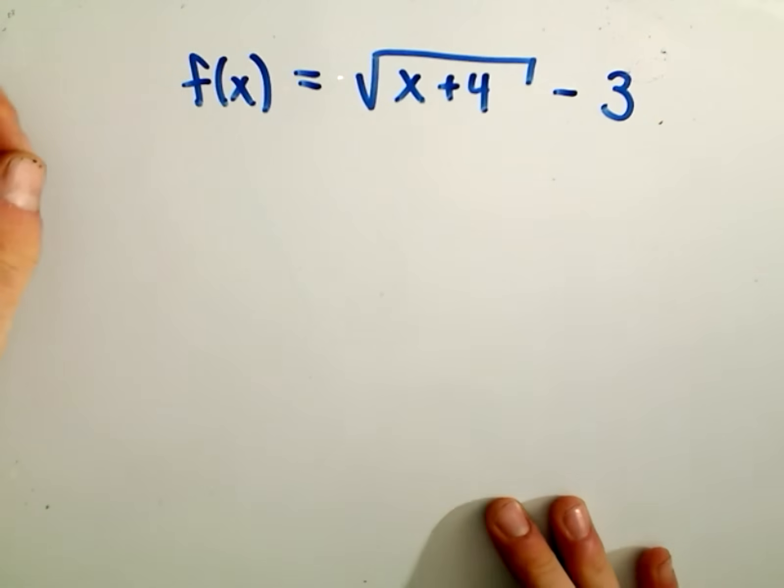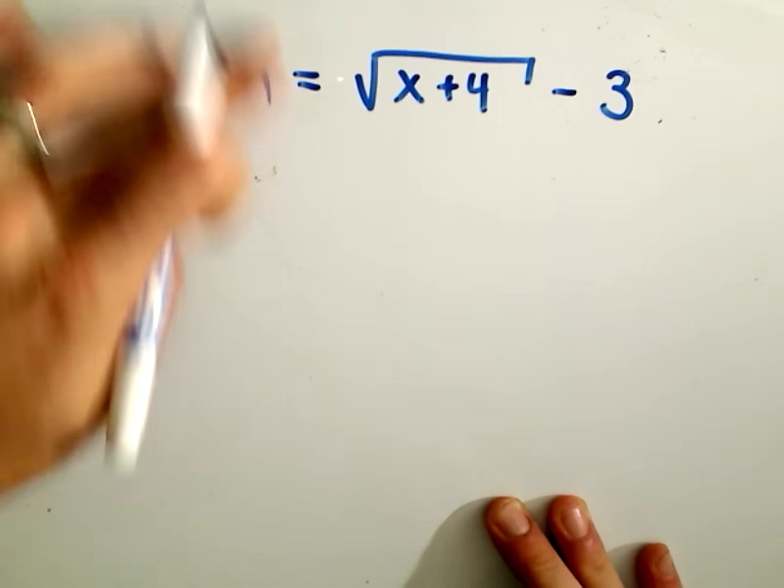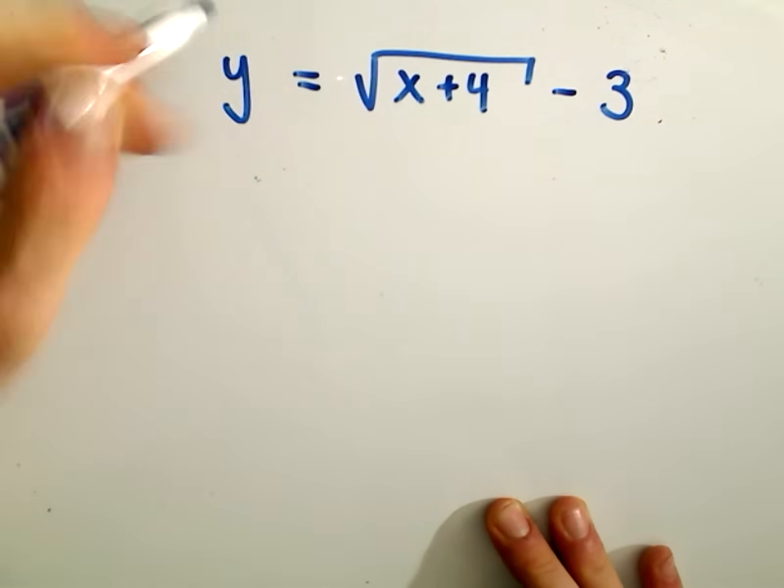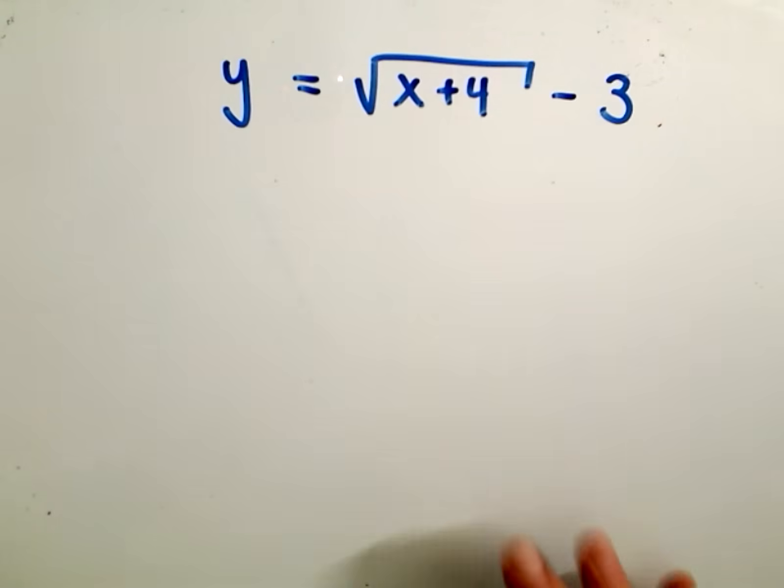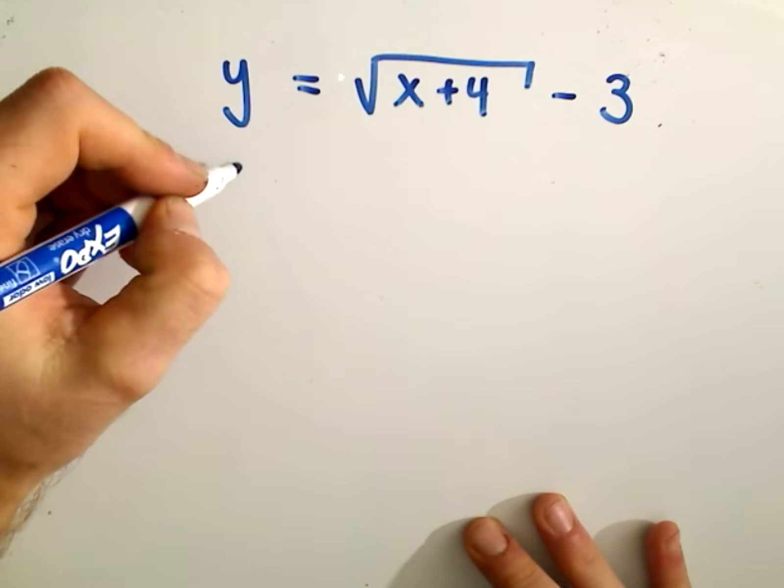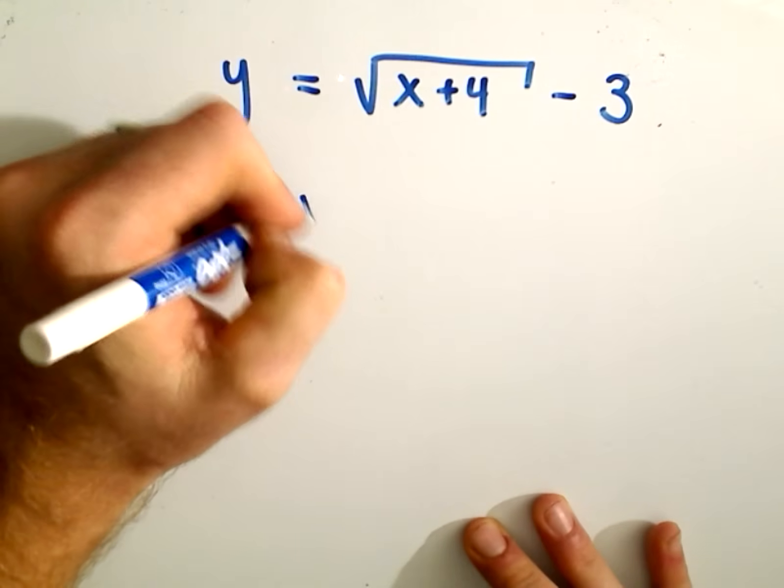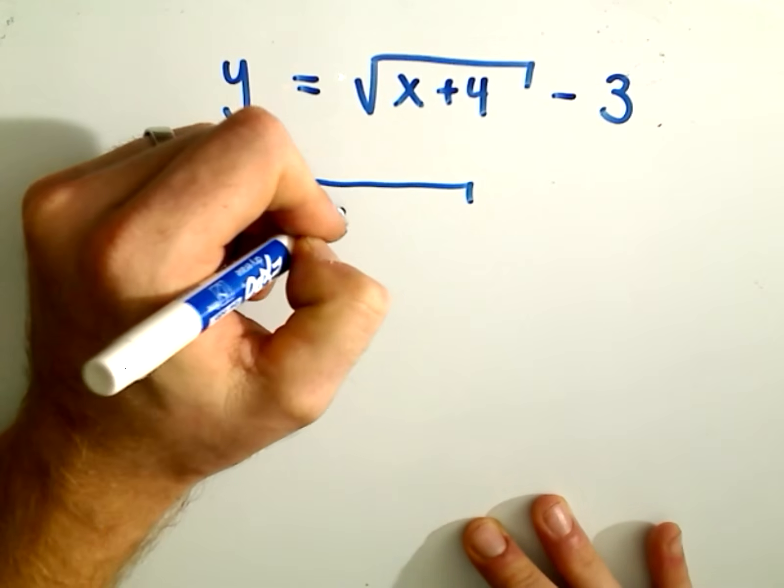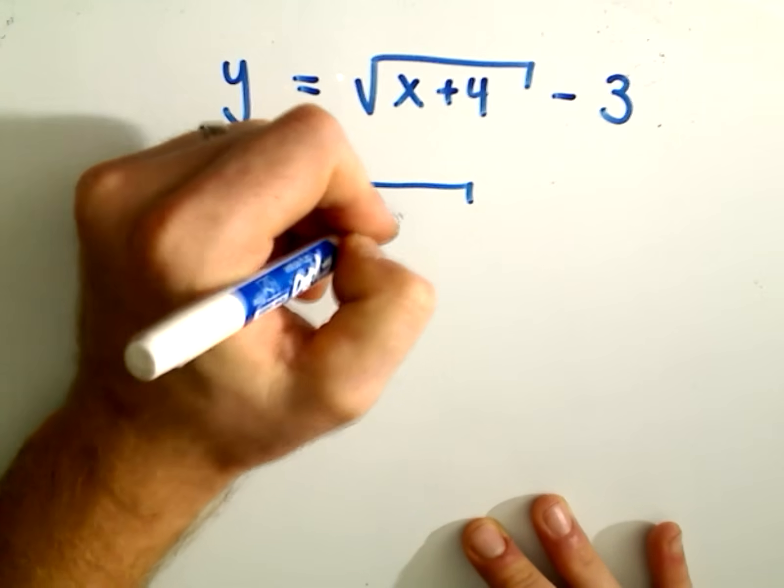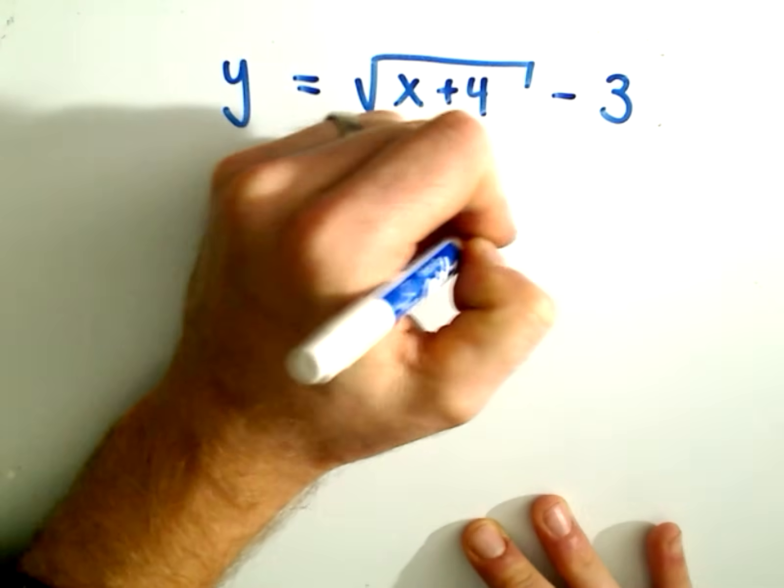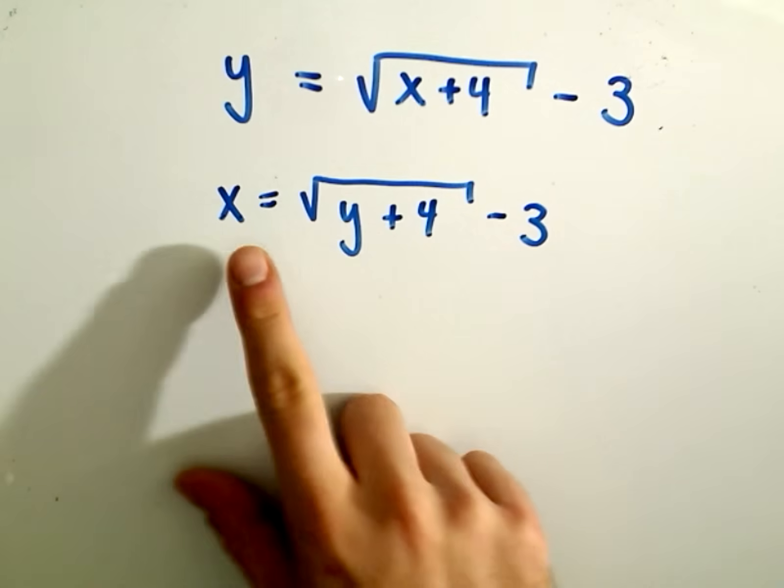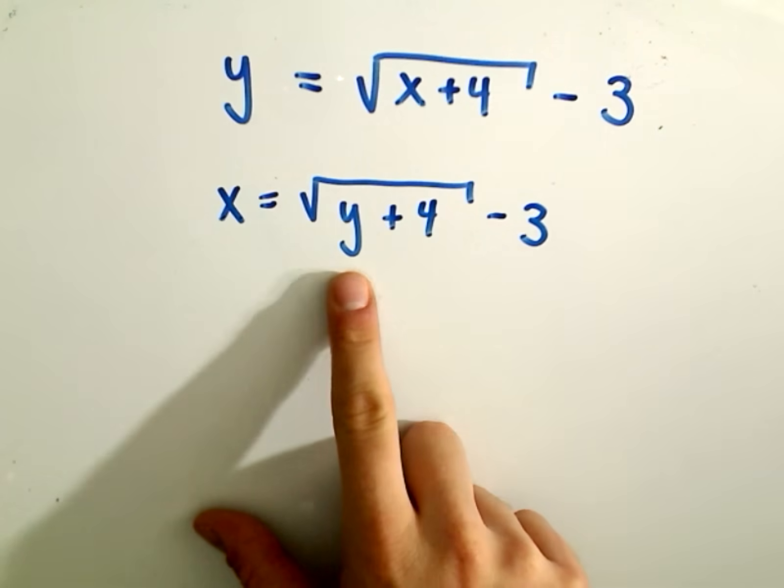So the first thing I do, I've got f of x equals square root of x plus 4 and then minus 3. So the first thing I do is I replace my f of x with a y, and then I replace everything. So my y I'm going to replace with an x, my x I'm going to replace with a y, and now I have to solve this for y.